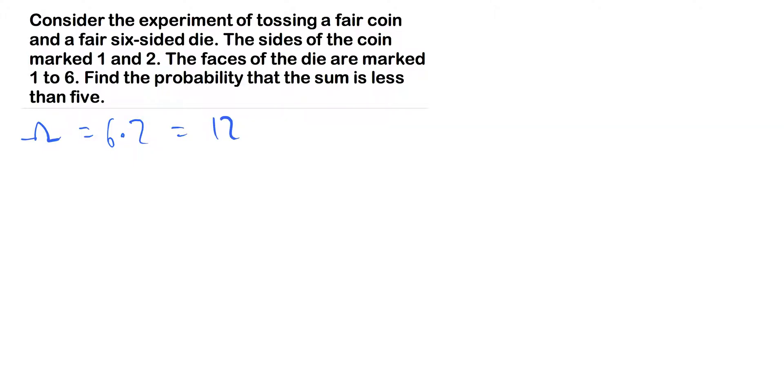Now we'll come back to this, but what the question is asking is find the probability that the sum is less than five. What we want is either the coin, which is one or two, and then the face of the die. I'm going to write down the possibilities that are less than five. If we have a one on the coin,